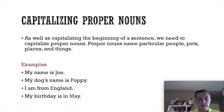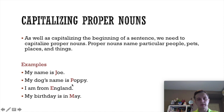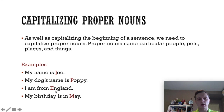As well as capitalizing the beginning of a sentence, we also need to capitalize proper nouns. Proper nouns name people, pets, places, and many types of things. For example, my name is Joe — capital J for Joe. My dog's name is Poppy — capital P for Poppy. You don't capitalize "dog" because that's the type of animal, but you do capitalize the name of the pet. I am from England — England is a country, a place, so we capitalize it with a capital E.